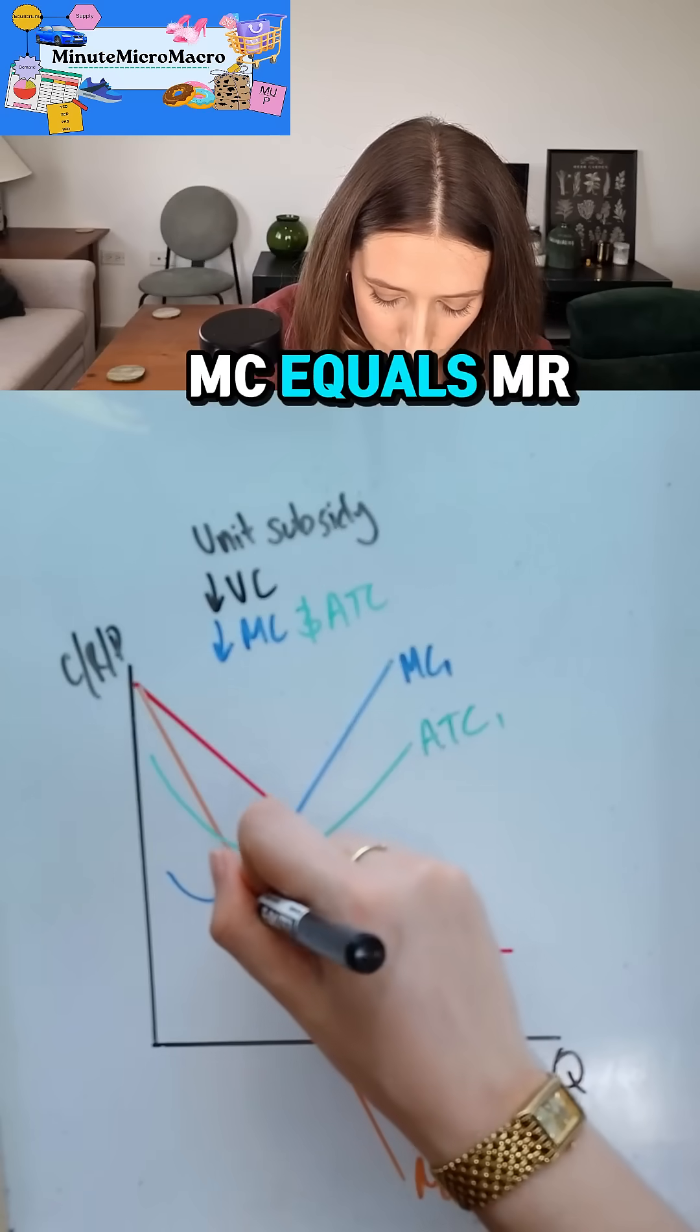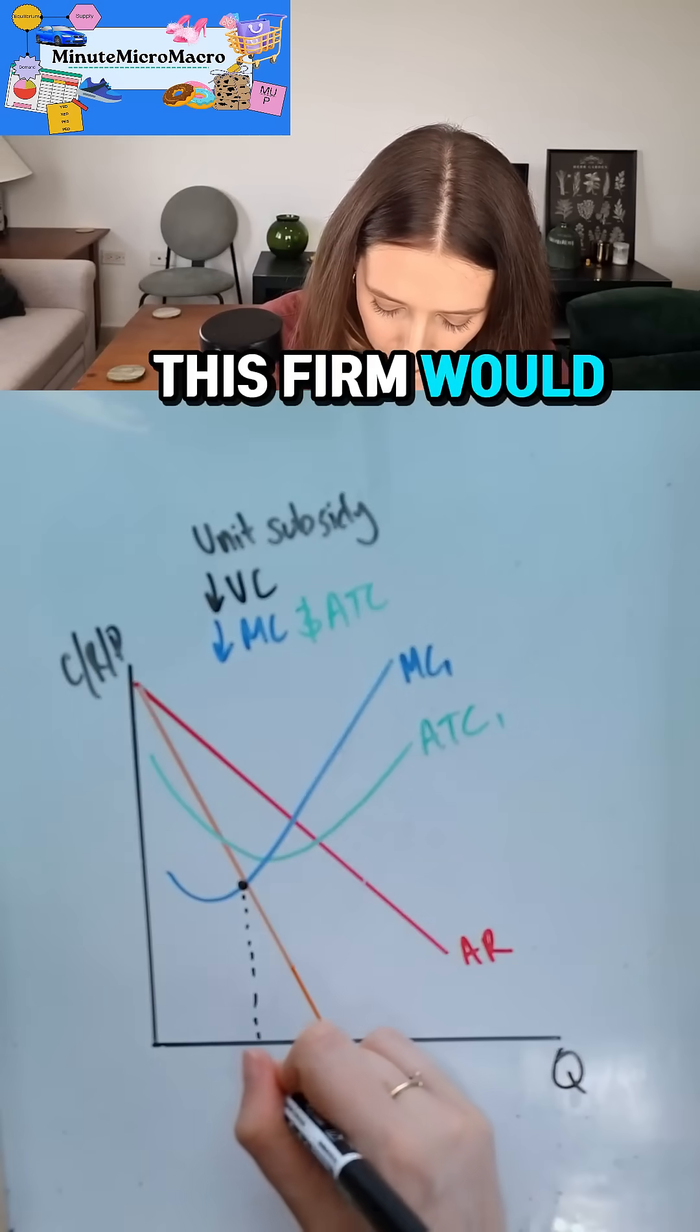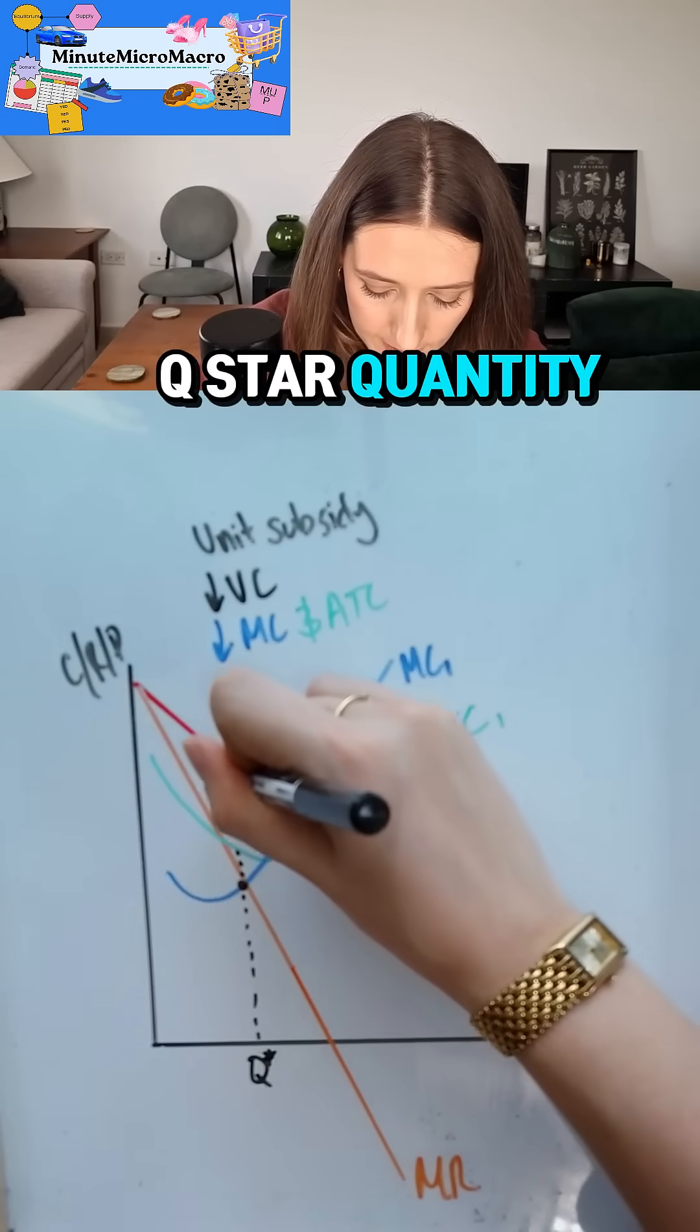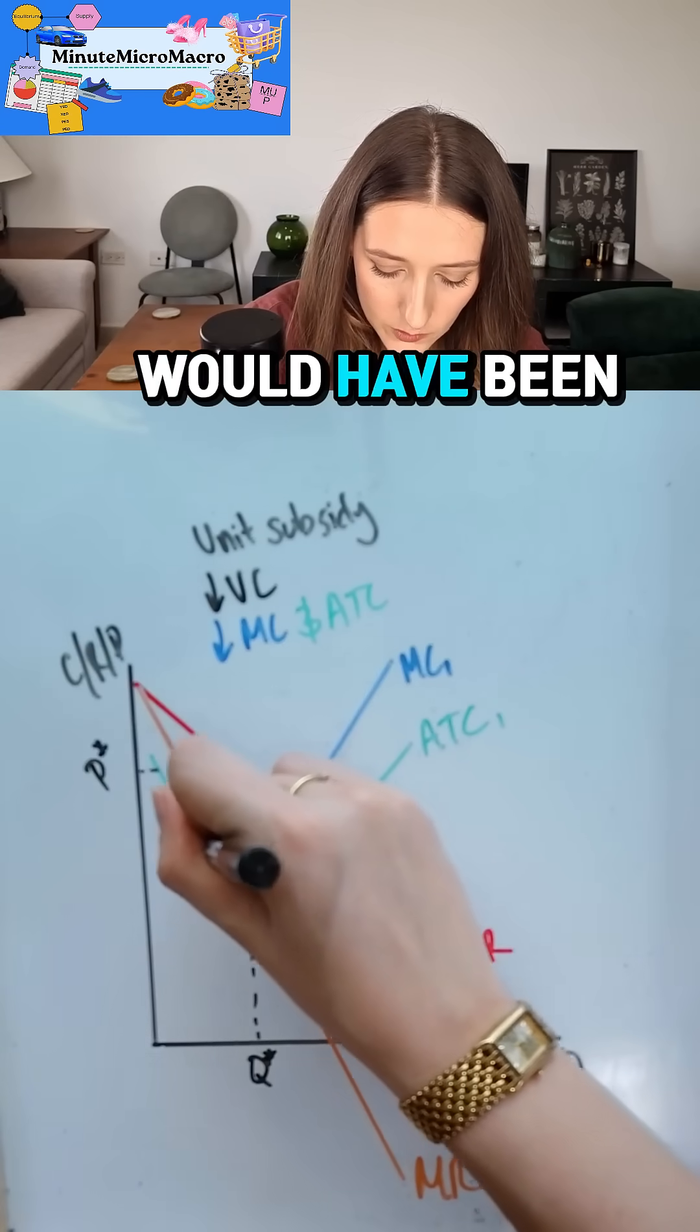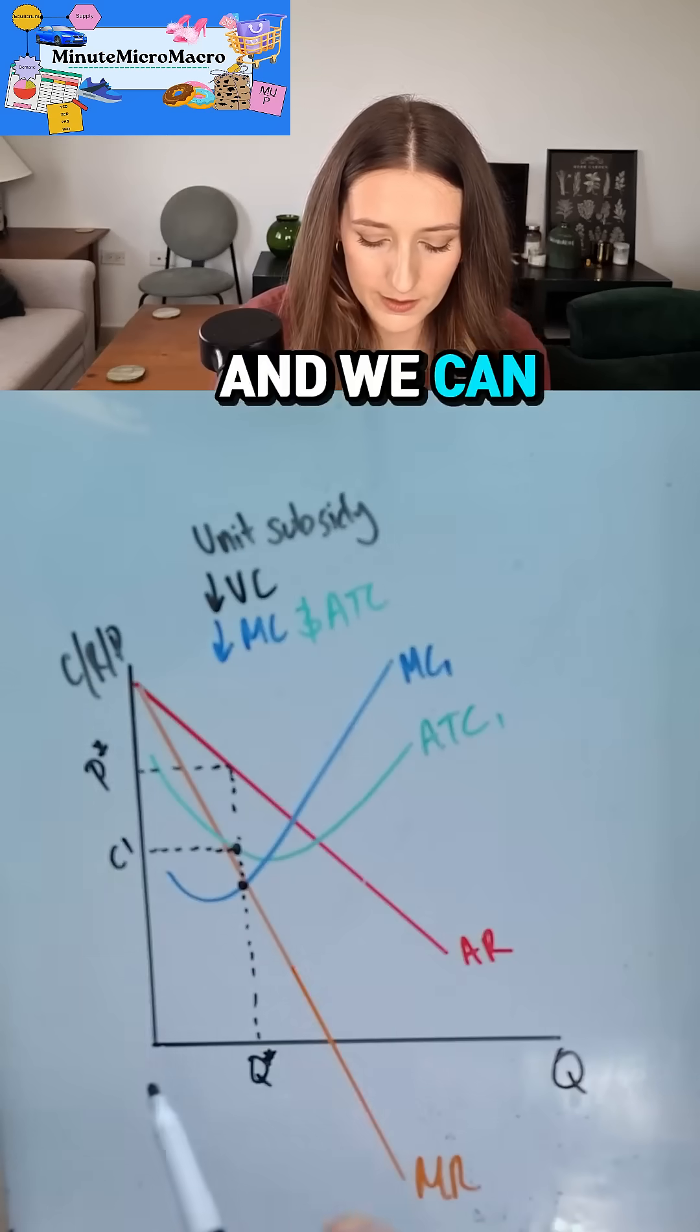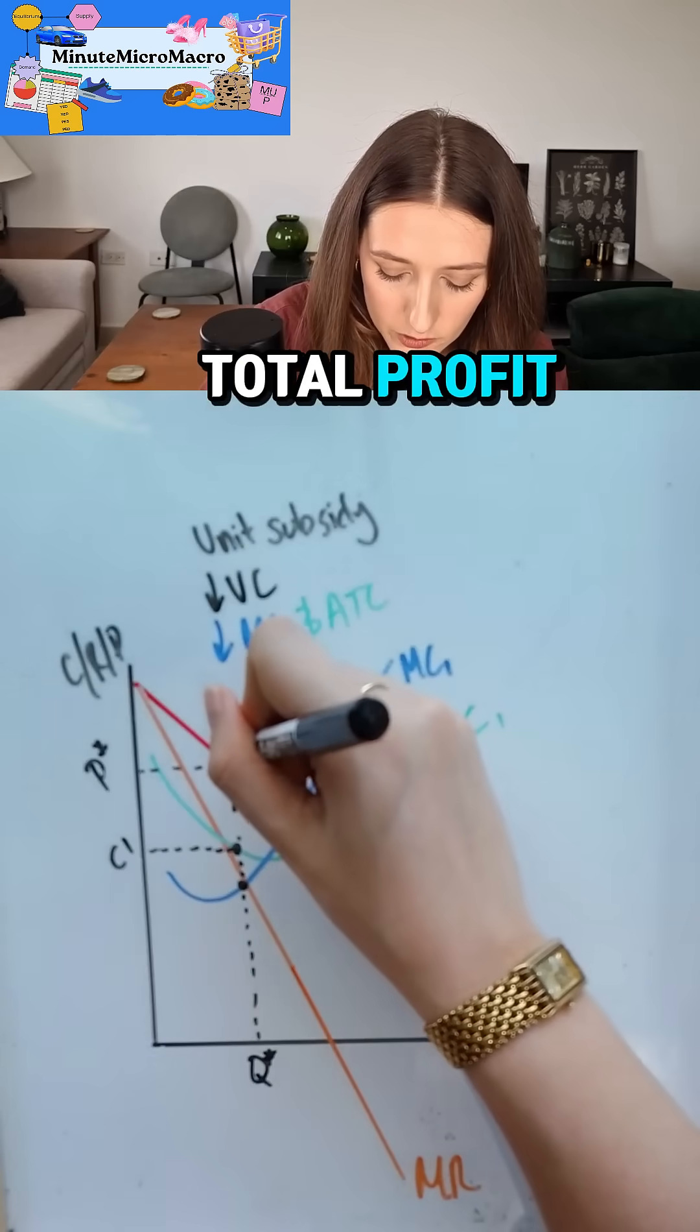Let's see what impact that has. So I've set myself back up again. MC equals MR initially. This firm would have been making Q star quantity, they would have had a price at P star, and their costs would have been at C1.